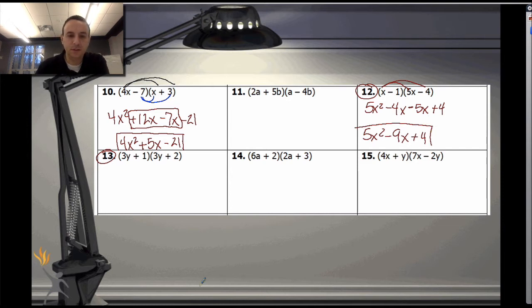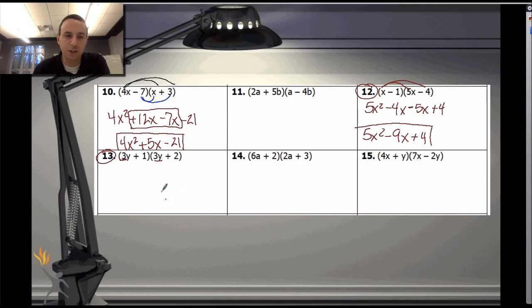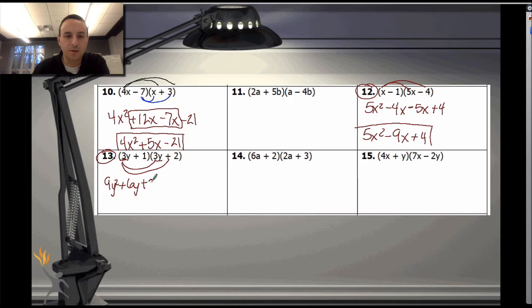Now let's try number 13, where I've got two coefficients attached to both variables. Still distributing: 3y times 3y is 9y squared; 3y times 2 is plus 6y; 1 times 3y is plus 3y; and 1 times 2 is just 2. Combining both like terms gives 9y squared plus 9y plus 2.